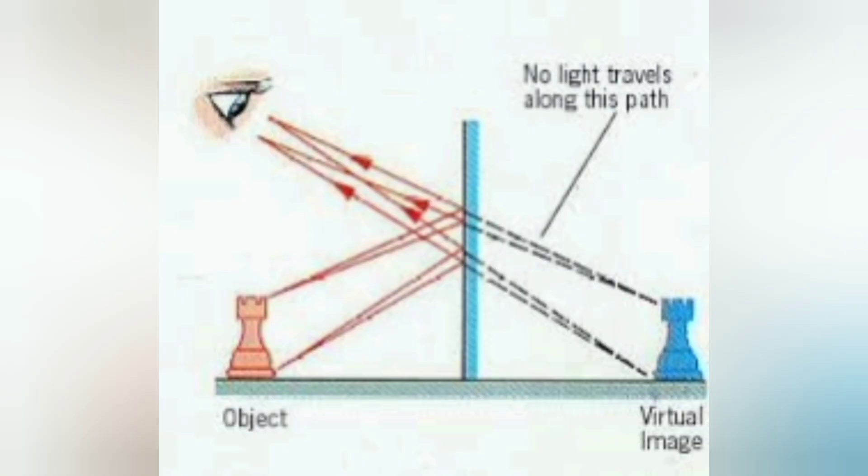The reflected rays are produced backwards so that the image is formed behind the mirror. If you measure the size of the object and size of the image, you will find that the size of the image is same as that of the object.